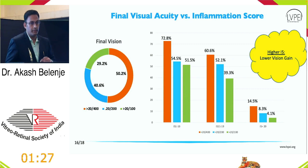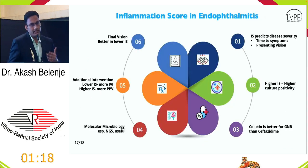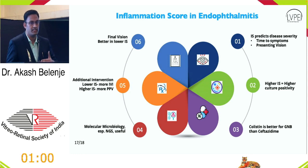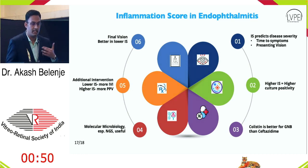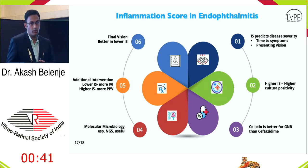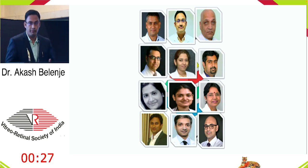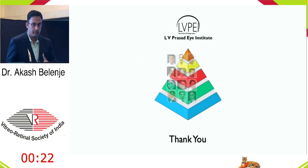Chances of additional intervention — vitrectomy and silicone oil usage — were much higher when the inflammatory score was above 20, and those patients had poorer visual acuity gain at three-month follow-up. The take-home messages: higher inflammatory score correlates with earlier presentation, poorer visual acuity, higher culture positivity, higher chance of gram-negative bacilli, and higher chances of needing additional intervention. Including PCR and NGS can double your chances of microbiology positivity. Inflammatory score is a novel and useful quantifying agent to prognosticate patients with post-cataract surgery endophthalmitis.